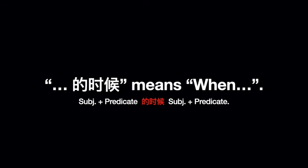的时候 means 'when'. It comes in a structure of subject and predicate 的时候, followed by another subject and predicate. So it's like when the first subject and predicate happens, the second subject and predicate happens too.